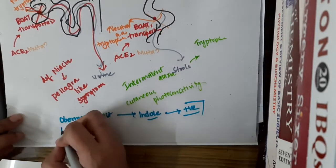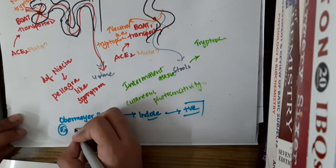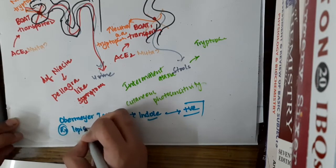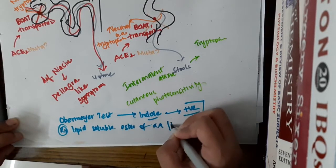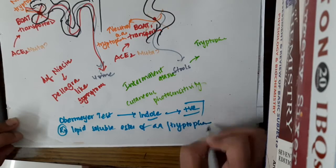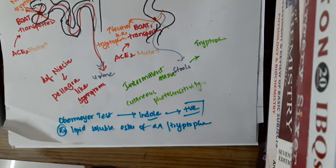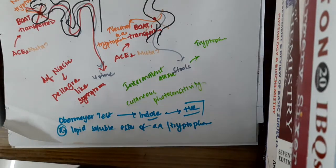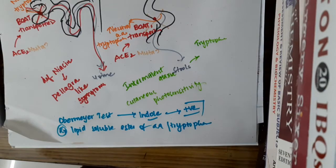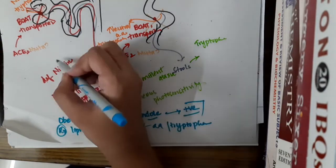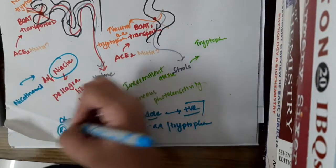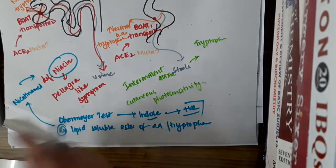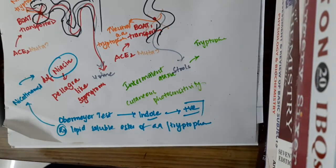For treatment, you should give a lipid-soluble ester of the amino acid tryptophan. Because it is lipid-soluble, it is reabsorbed just like fats and does not require these transporters, which helps in the cure. And because there is deficiency of niacin, you can supplement nicotinamide in the diet. These are the two treatment options available for Hartnup disease.